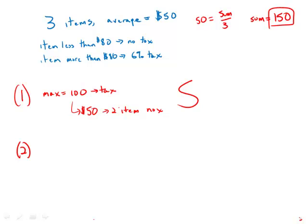Statement number two says the price of the least expensive item from the store was $10. So the min is $10. Well, that means the other two items cost together $140.